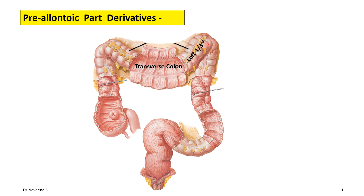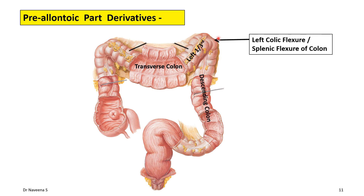The transverse colon continues as the descending colon at a sharp bend known as the left colic flexure or splenic flexure of the colon. The descending colon continues below as the sigmoid colon. So the transverse colon left one-third portion, descending colon, and sigmoid colon are the definitive derivatives of the pre-allantoic part of the primitive hindgut.